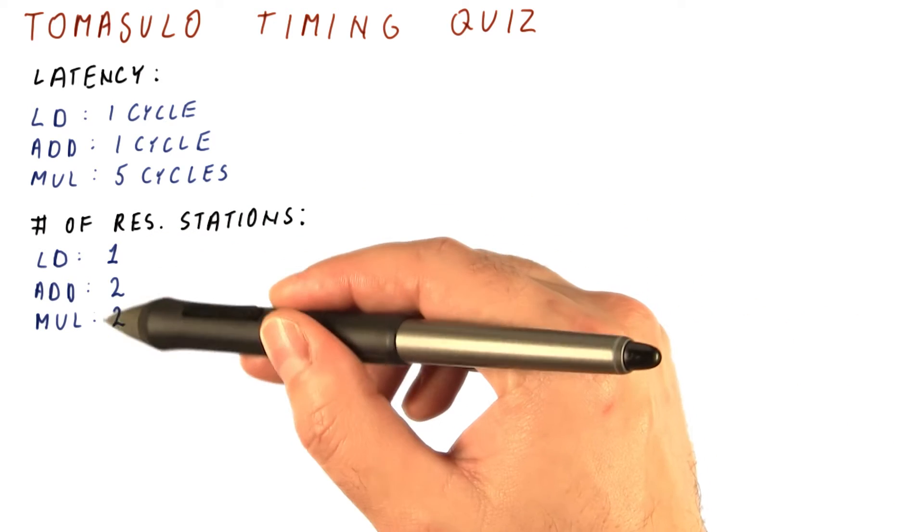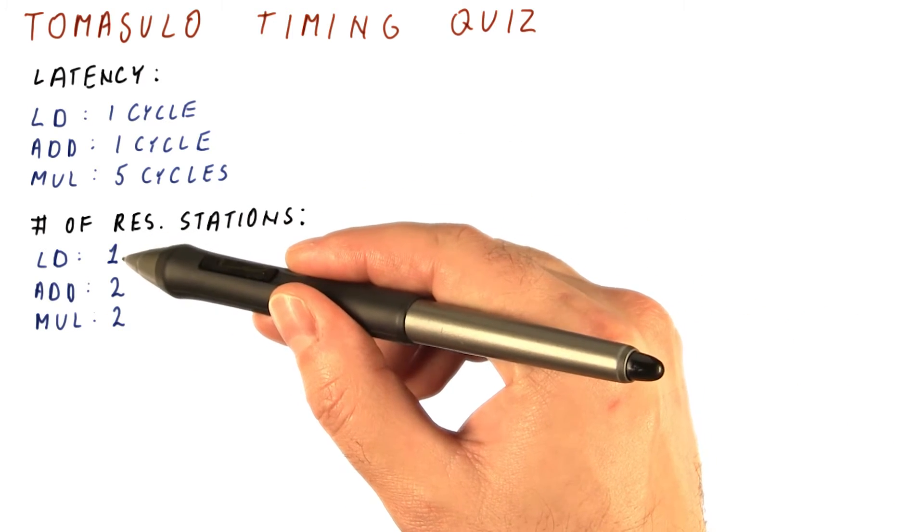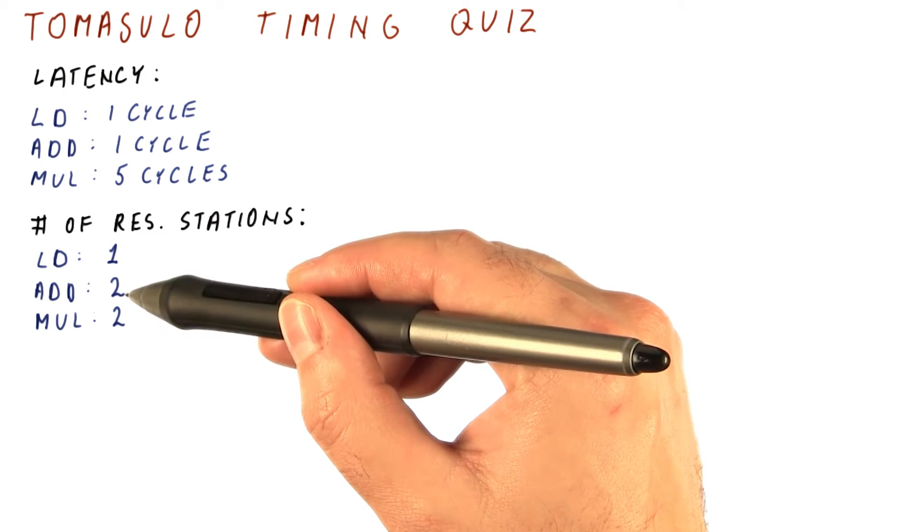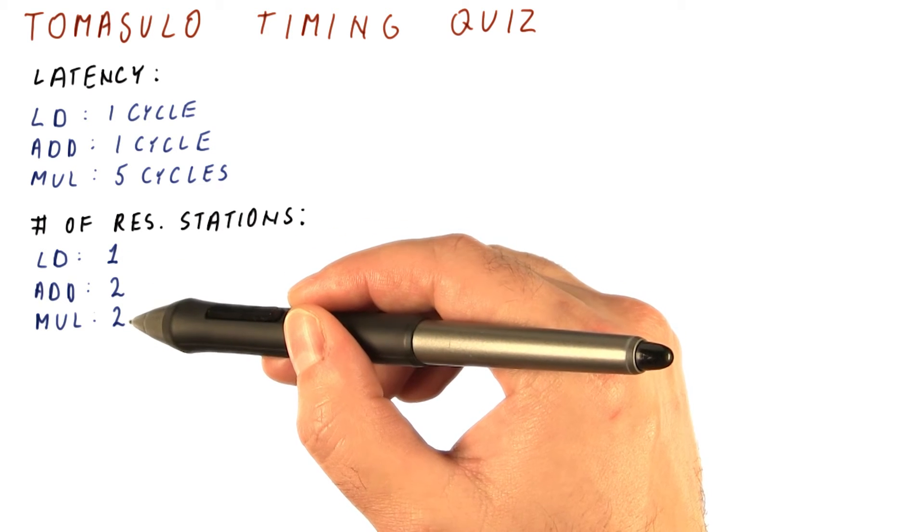Suppose we also have this number of reservation stations. We have one load reservation station, two add, and two multiply reservation stations.